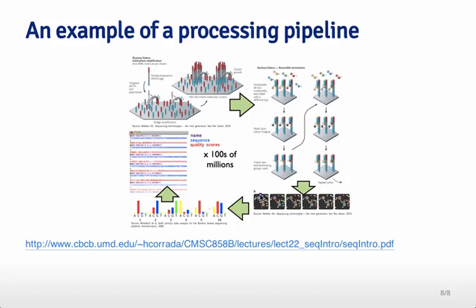If you zoom in on one specific dot corresponding to the sequence of one of these clusters, you can follow along from image to image and see what the color is in that image. Whichever color is the brightest is the one you assign to that sequence. For example, the very first letter for this particular fragment is going to be a C, because of these four letters the C is actually the highest. Then in the second nucleotide the brightest letter is G, so the next letter assigned would be G, and so forth.